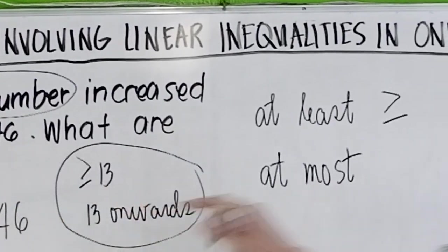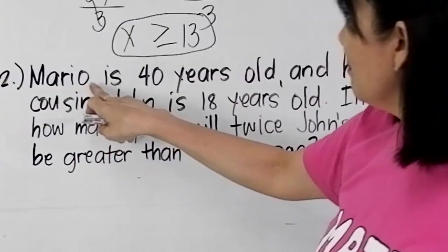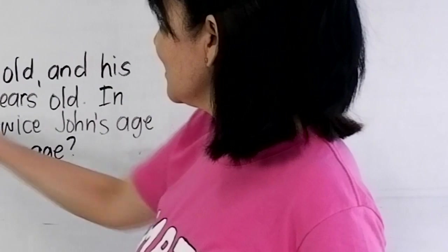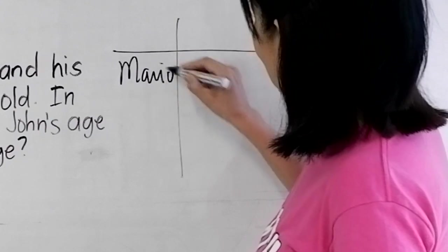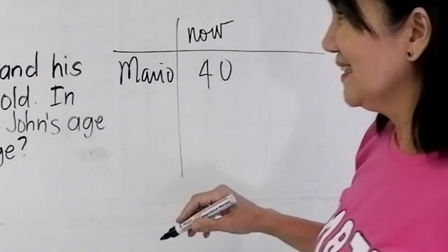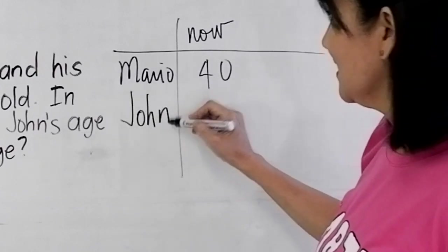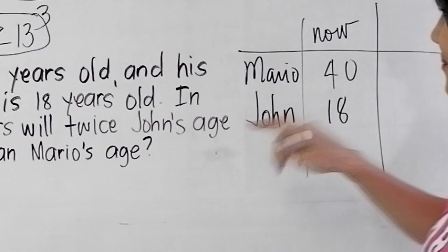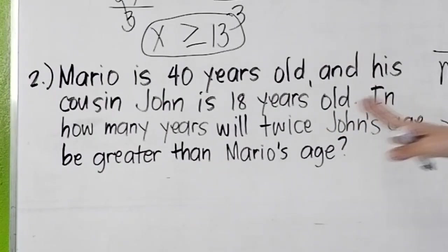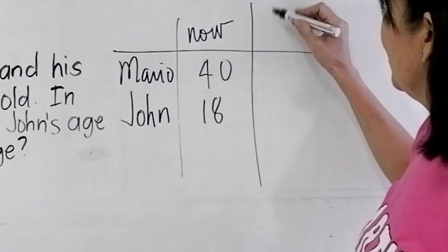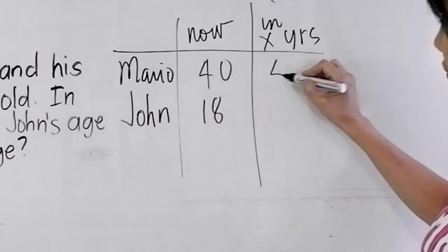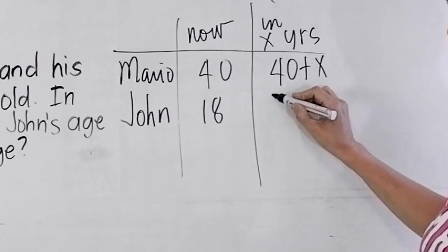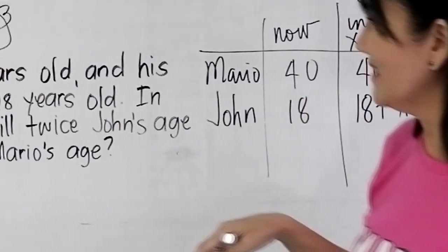Problem number 2: Mario is 40 years old and his cousin John is 18 years old. We have here Mario's age is now 40 years old, and John's age is 18 years old. In how many years will twice John's age be greater than Mario's age? So in x years, let us write here, in x years Mario will be 40 plus x and John will be 18 plus x. Did you get that?